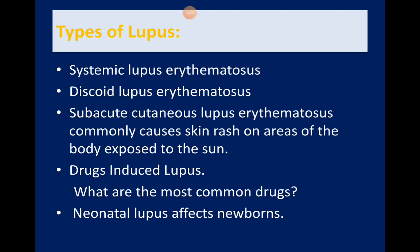Lupus has a systemic form called systemic lupus erythematosus (SLE) and a discoid form. Discoid lupus occurring on its own without other systemic features is considered a dermatological disorder; if occurring in the context of systemic features and meeting SLE criteria, it is part of systemic lupus. Lupus can also present as a subacute cutaneous form on sun-exposed areas. There is also a category called drug-induced lupus, with certain drugs associated with it.